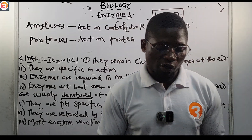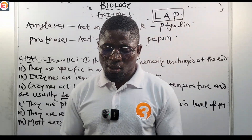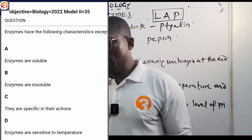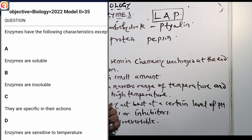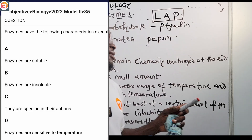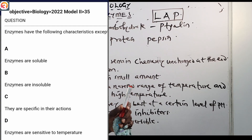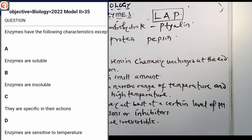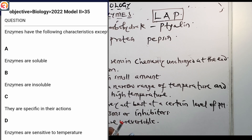The 2022 question number 35 asks: enzymes have the following characteristics except — A: enzymes are soluble; B: enzymes are insoluble; C: they are specific in action; D: enzymes are sensitive to temperature. A is correct — enzymes are soluble. B is wrong — enzymes are not insoluble. C is correct. D is correct — enzymes act best over a narrow range of temperature and are denatured at high temperature. So the answer is B.